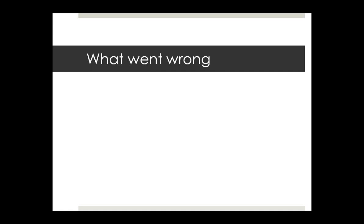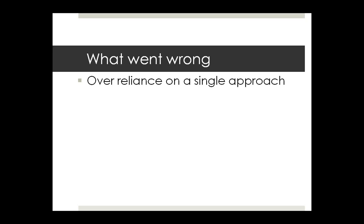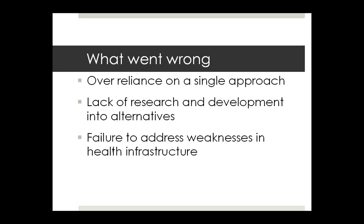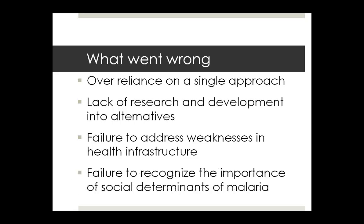What went wrong with eradication? A number of things. First, over-reliance on a single approach — spraying was basically dominant, this was the high point of the dominance of vector control. Lack of research and development into alternatives. At the end of the day, you had to be able to identify remaining cases and treat them, otherwise they became sources of infection to mosquitoes, and transmission would resume. And many cases showed the failure to recognize the importance of social determinants of malaria undermined eradication programs.